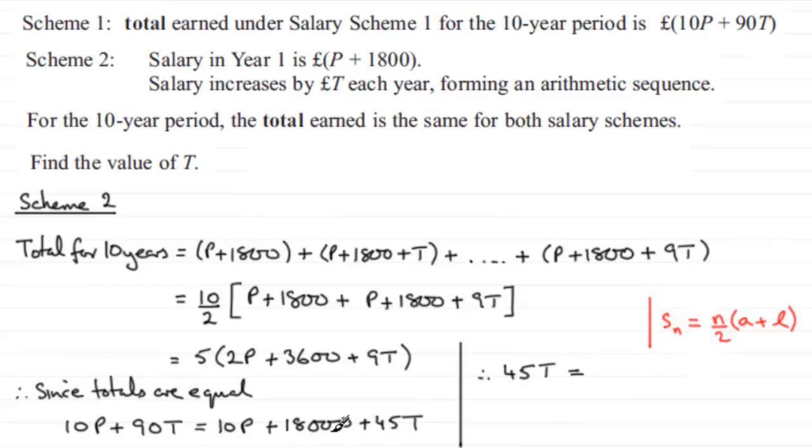If we divide both sides by 45, T turns out to be exactly 400.